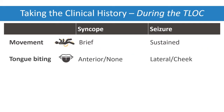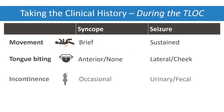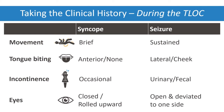Tongue biting or urinary or fecal incontinence are suggestive of seizure, but can occasionally be seen during syncope. Other differentiating features are summarized in this table, but none are pathognomonic for a specific etiology.